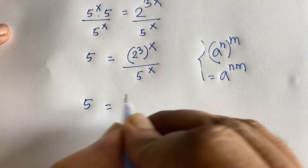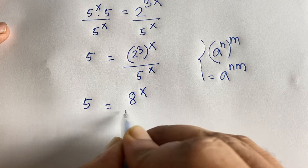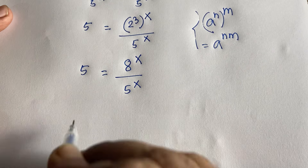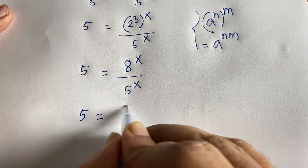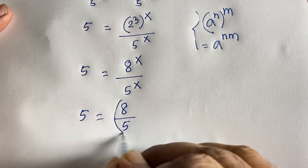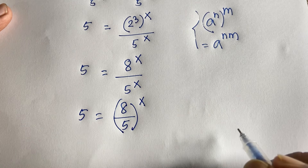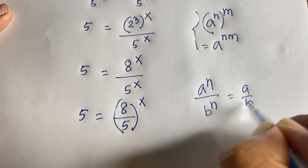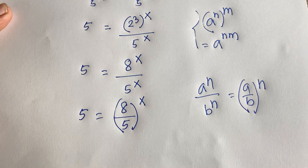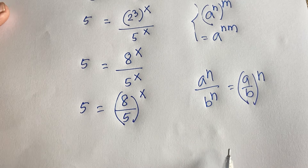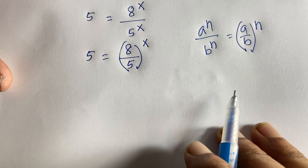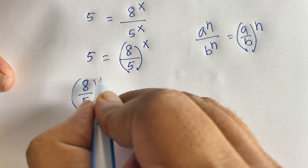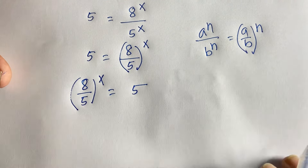So we have 2 is equal to 2 to the power 3 all to the power x, divided by 2 to the power x. Since 2 to the power 3 equals 8, and using the rule a to the power n over b to the power n equals (a/b) to the power n, we get (8/5) to the power x — wait, simplifying gives us (8/5) to the power x is equal to 5.